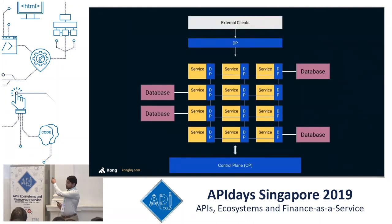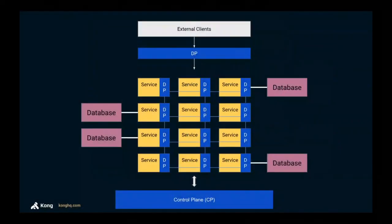The API gateway becomes yet another data plane that happens to be at the edge, dealing with requests from external clients. Simple as that.